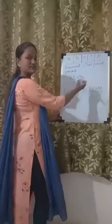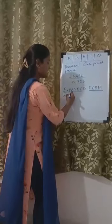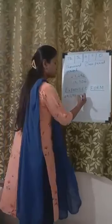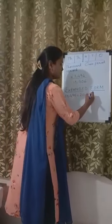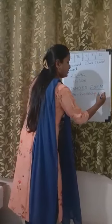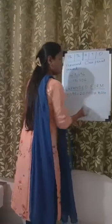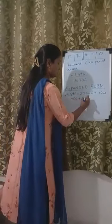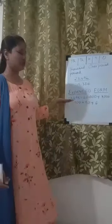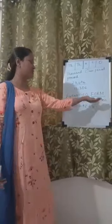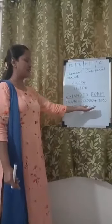So if I know the place value of the number, I can expand the same number, which is called the expanded form of the number. When we write the expanded form, we also add an addition sign — a plus sign between the numbers. So here, I have the expanded form of the number 23,496. That is 20,000 plus 3,000 plus 400 plus 90 plus 6.